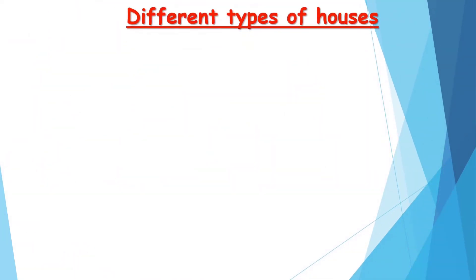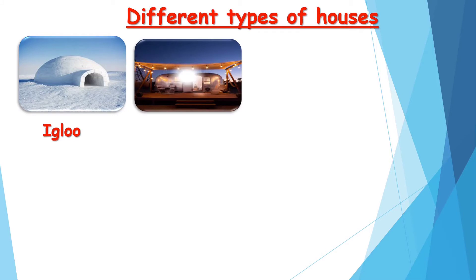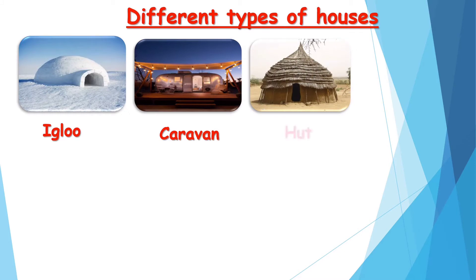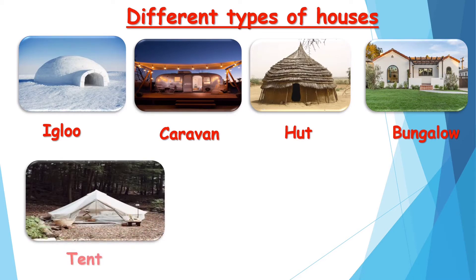Our first topic is different types of houses. In the previous EVS video you have learned about different types of houses, so today we will quickly revise this topic. Let's start. The first type of house is an igloo. Second is a caravan. Third is a hut. Fourth is a bungalow. Fifth is a tent.